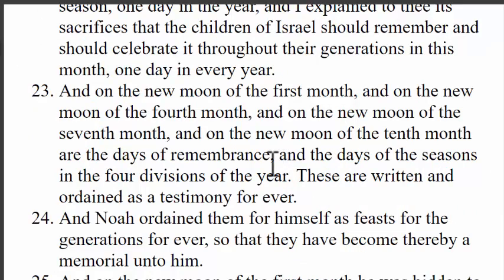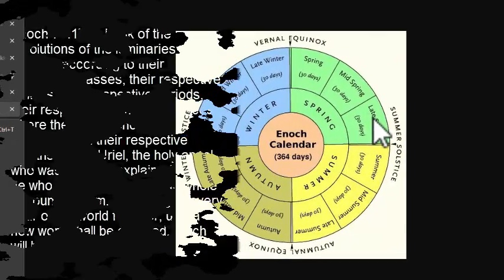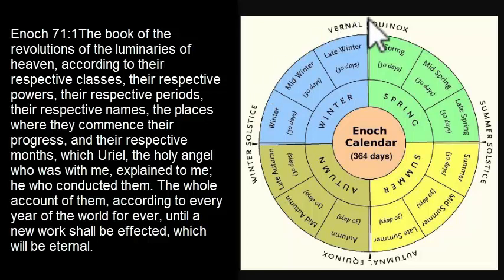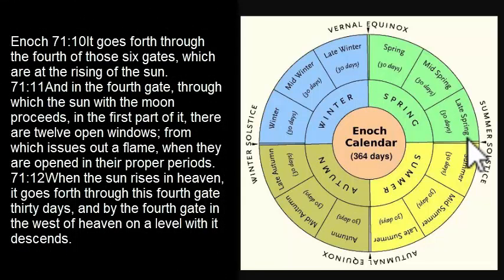It says 'the Days of the Seasons of the Four Divisions of the Year.' This is what we're talking about when we're talking about these New Moon Days or these Days of Remembrance. These four days make up the four seasonal days of the year — the days you see represented on an Enoch calendar between each one of the seasons. Each of the four seasons starts with one of these Days of Remembrance. Maybe this is what our Father had in mind when he had us remember these days — that we're recognizing the exact date in which the seasons change according to the sacred calendar.